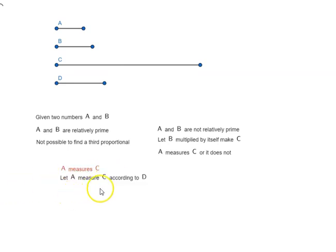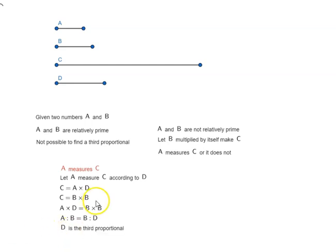A measures C. Let A measure C according to D, which means C equals A times D. We know that C equals B times B. So, A times D equals B times B. If we write it in proportion form, it becomes A is to B as B is to D. We got the third proportional. D is the third proportional.